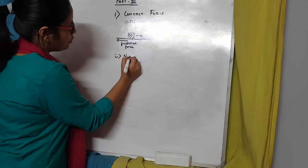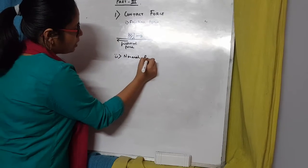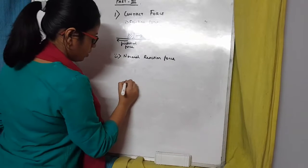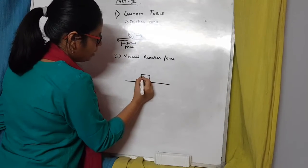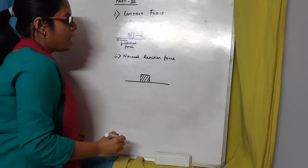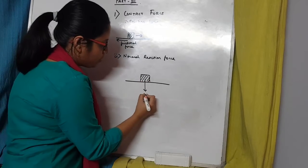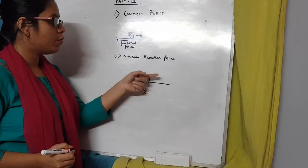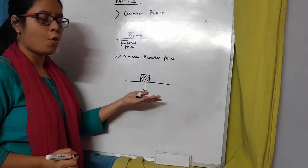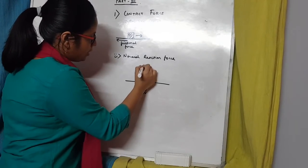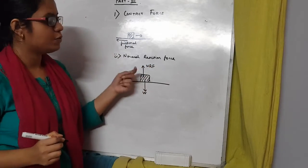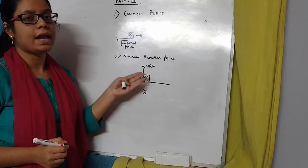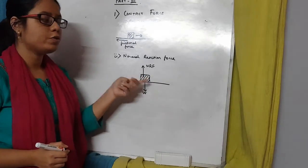The second contact force is normal reaction force. If a body is lying on a surface, one force acts downward which is the weight of the body, and another force acts upward — the force that the surface applies on the body. This upward force is the normal reaction force. It only comes into play when the body is lying on the surface, so it is a contact force. You will learn more about this in Newton's third law.